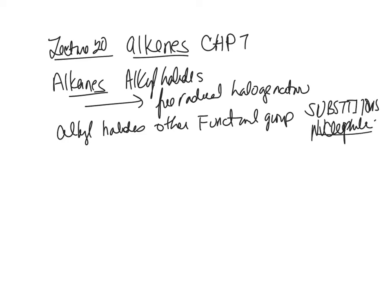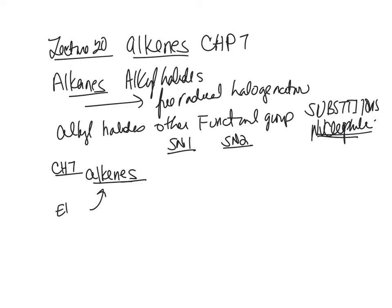For nucleophilic substitution we talked about SN1, which is unimolecular — the rate of reaction is only proportional to the concentration of your alkyl halide. We also talked about SN2, where the rate of reaction is proportional to your alkyl halide and your nucleophile. Now in chapter 7 we're going to talk about a new functional group called alkenes, and how to make them — either an E1 or an E2 reaction, where E stands for elimination.